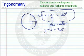If we divide both sides by 2, we get pi times radians equals 180 degrees.